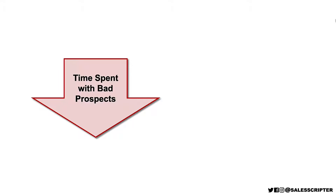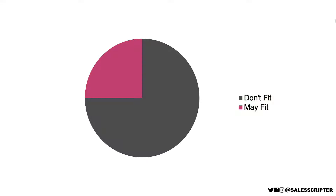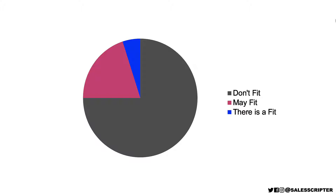We want to minimize the time we spend with bad prospects and maximize the time we spend with good prospects. Gathering more information by asking good questions will help you to make better decisions in this area. The majority of prospects you email, call, or network with do not fit well or need what you sell. Some prospects may have a fit, and of those, some have a clear fit.